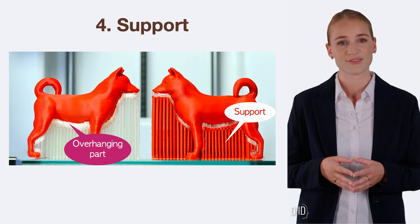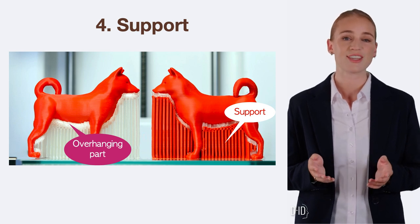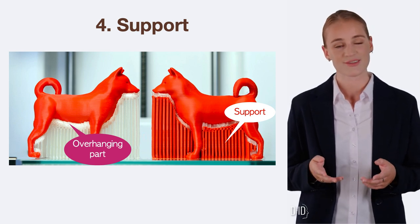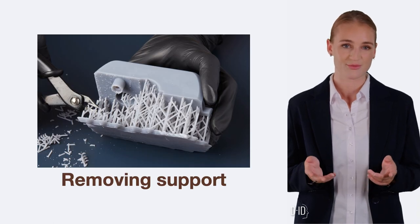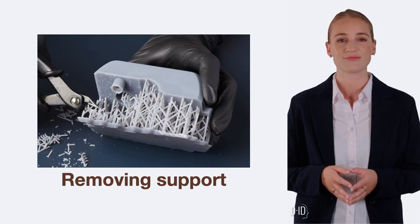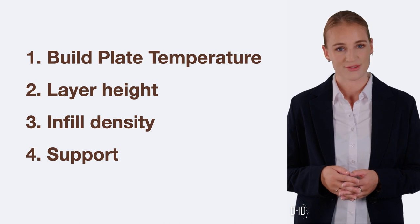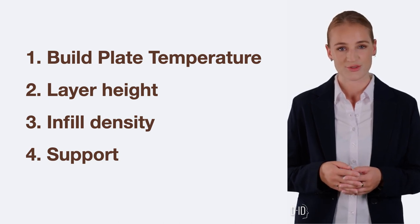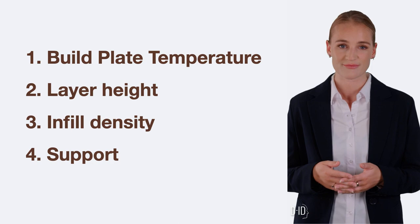Support: this is a temporary structure the slicer adds to the model to support overhangs during printing. The support is removed after the print is complete. By understanding and manipulating these settings, we can control the quality, speed, and strength of our prints.